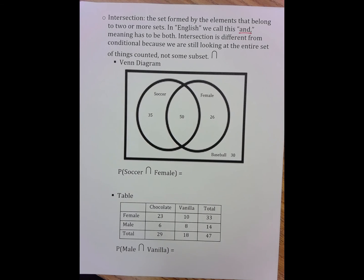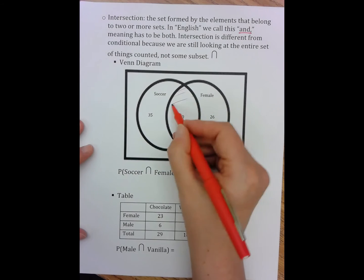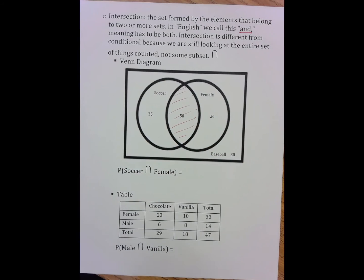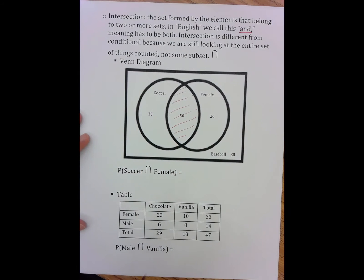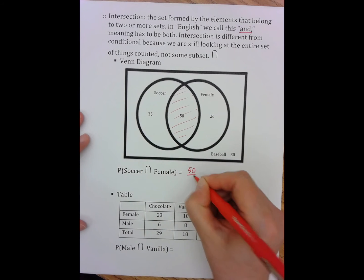So I'm looking for the place that overlaps in this Venn diagram that is both soccer and female at the exact same time. And it turns out that that happens right here, that that is the one and only group of the one, two, three, four groups that are both soccer and female.